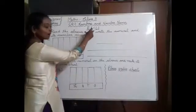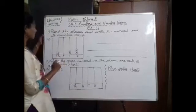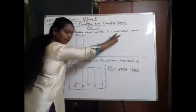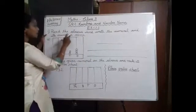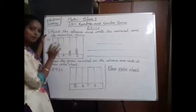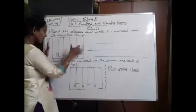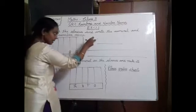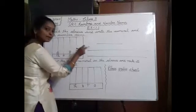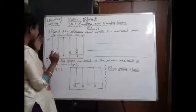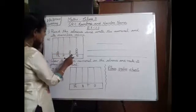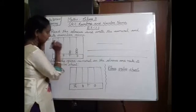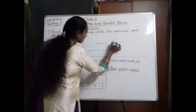Now we are going to start Exercise 1.1. Question number 1: Read the Abacus and write the numeral and its number name. In this Abacus, in the 1's place, how many balls are there? 1, 2, 3. I am going to write 3.